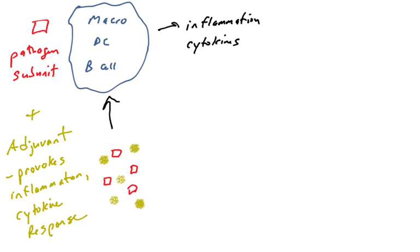So substances in vaccines need to be immunogenic, right? And so adjuvants are immunogenic. They provoke an immune response. And it's not just the pathogen subunit. It has to be other molecules. It can be other molecules like adjuvants.